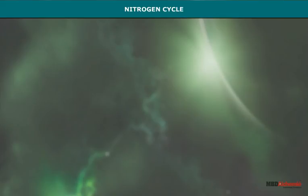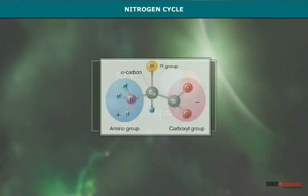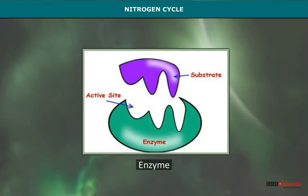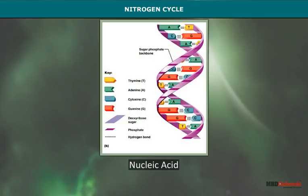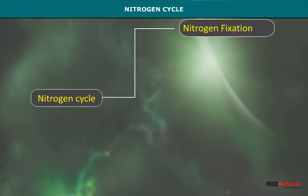Nitrogen cycle. Nitrogen is an essential constituent of all major organic compounds present in living organisms — amino acids, proteins, enzymes, nucleotides, and nucleic acids. Different processes that occur during the nitrogen cycle are nitrogen fixation, nitrogen assimilation, ammonification, nitrification, and denitrification.